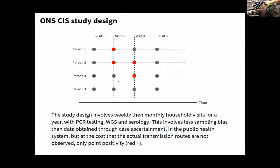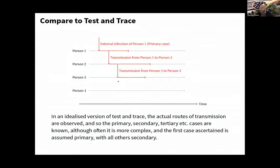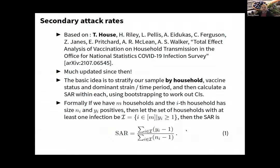We don't need to identify them as individual primary and secondary cases to say the secondary attack rate is two-thirds. This equation says you take out one person in the household and work out a crude secondary attack rate, then compare to studies with tracing design.